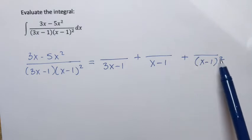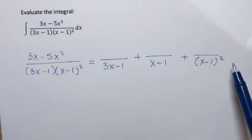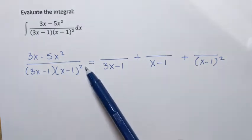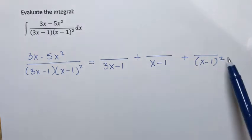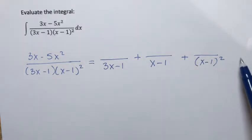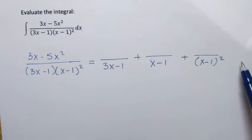So power 1, power 2, and then I stop. If it were power 3, I would add one more fraction with (x minus 1) to the third power in the denominator, and so on.